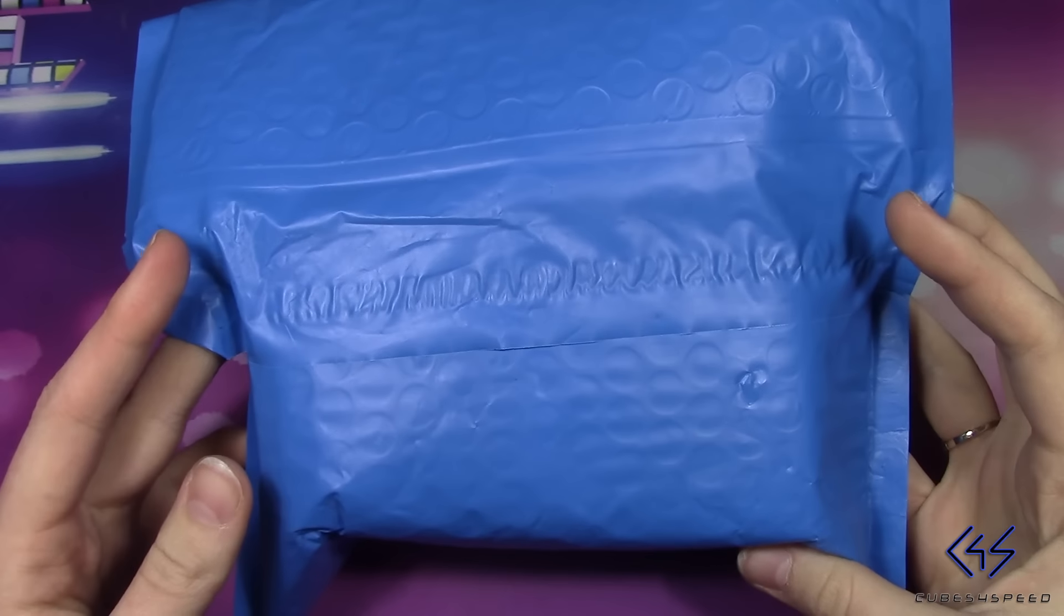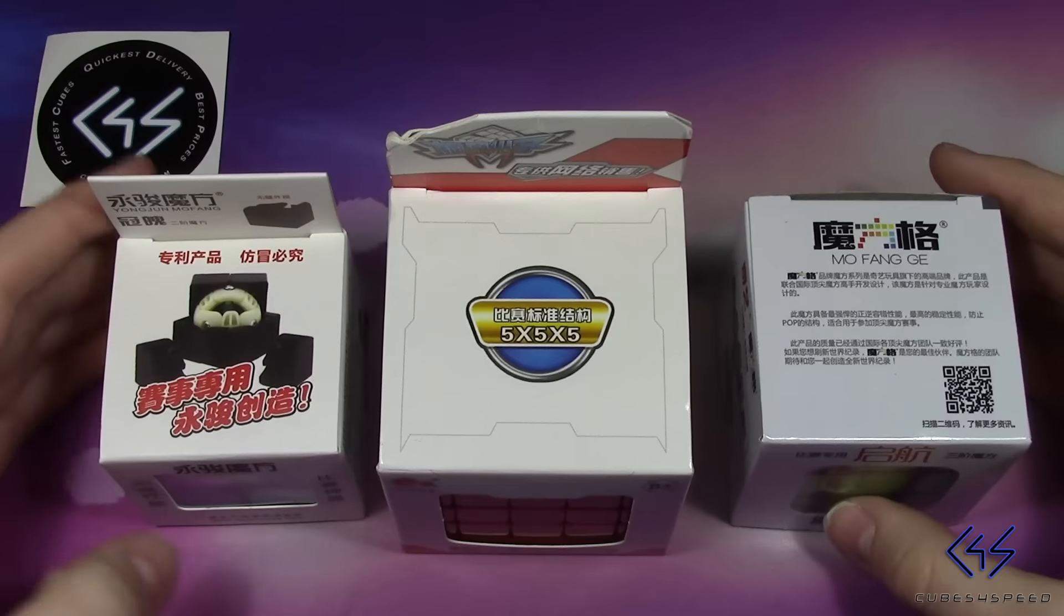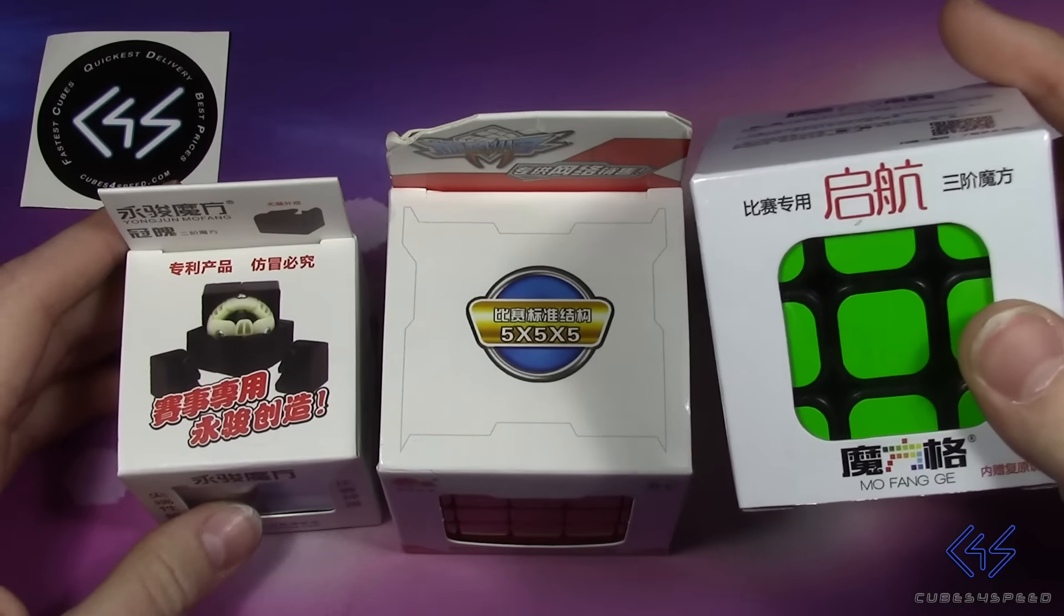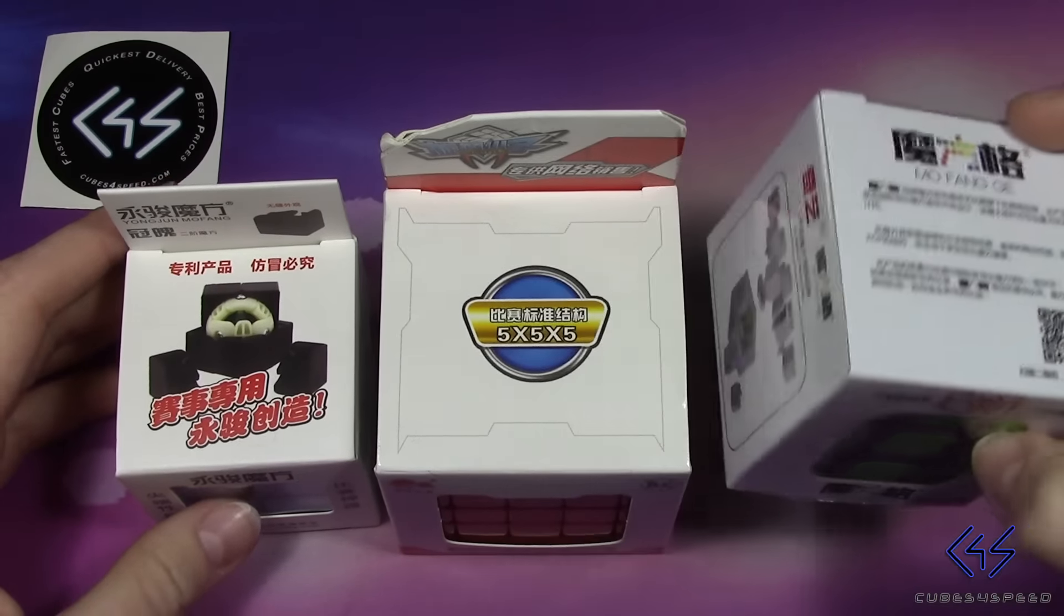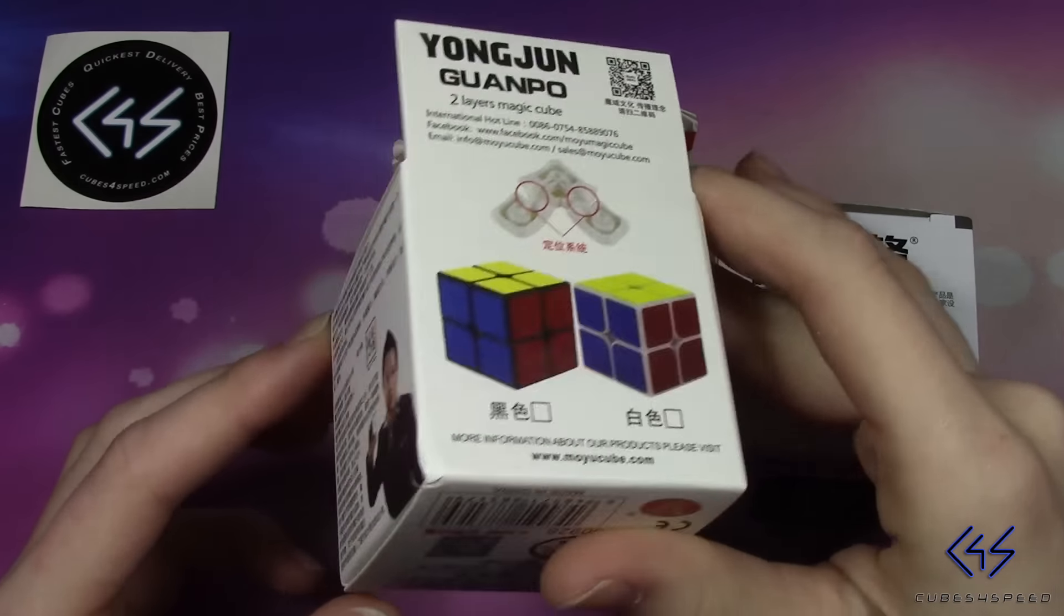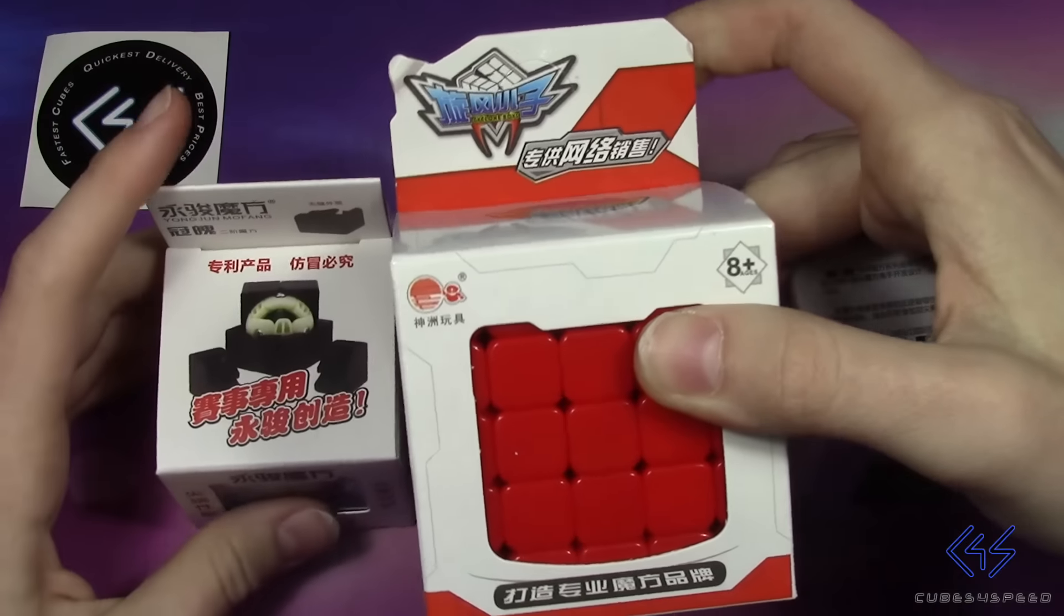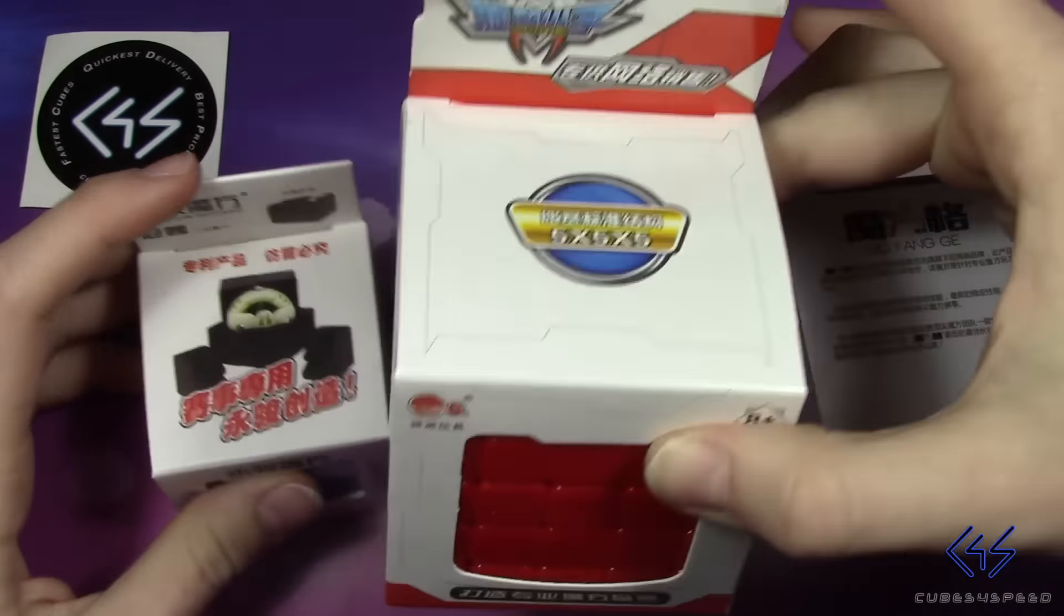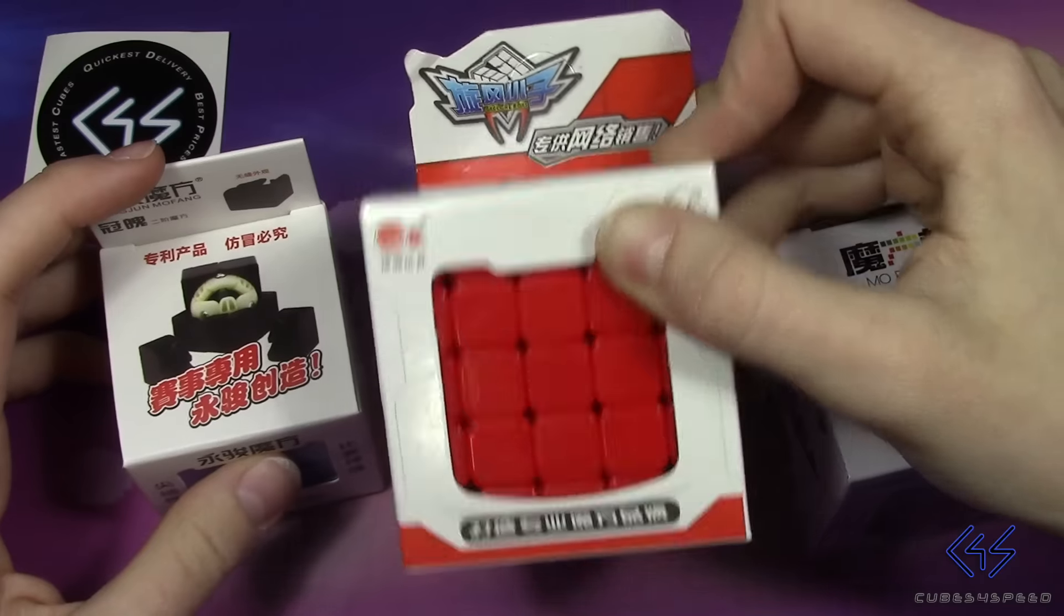Hey what's up guys, today we have an unboxing from Cubester Speed. What we have here is the Qi Yi Sail which can be purchased for only $3.25, the YJ Guan Po which can be purchased for $3.50, and then the Cyclone Boys G5 which is only $12, and as you can see I have it in stickerless.